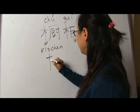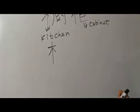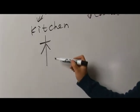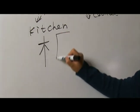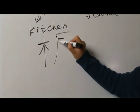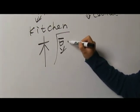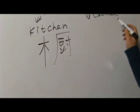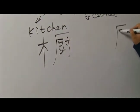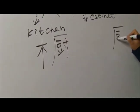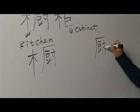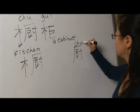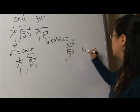Well, in the character 厨, it contains this wood radical. And the right part — exactly, the right part — this character. Also, its pronunciation is 厨, it means kitchen.